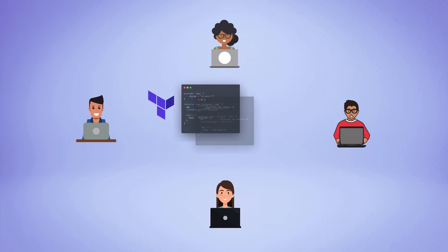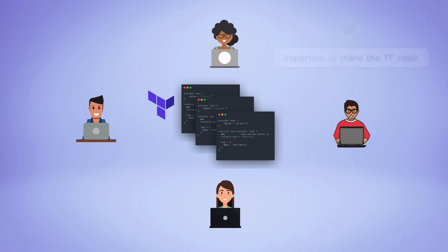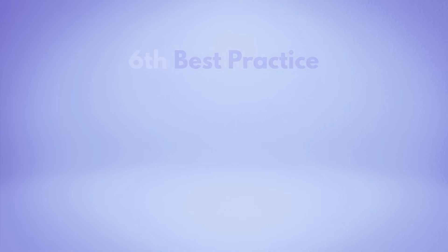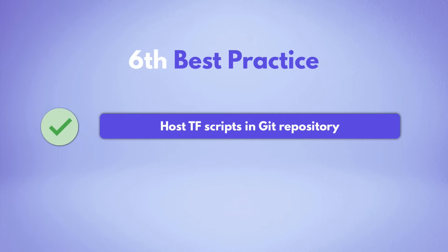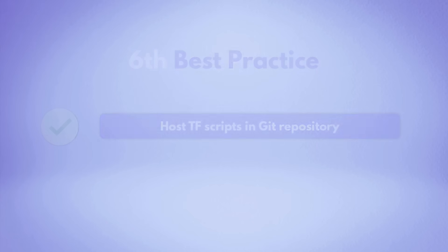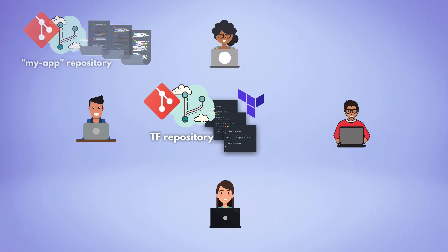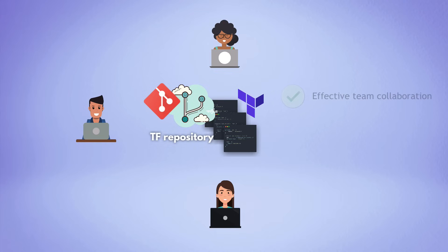When you're working on Terraform scripts in a team, it's important to share the code in order to collaborate effectively. So as the next best practice, you should host your Terraform code in its own Git repository, just like your application code. This is not only beneficial for effective collaboration in a team, but you also get versioning for your infrastructure code changes, giving you a full history of changes in your Terraform code.